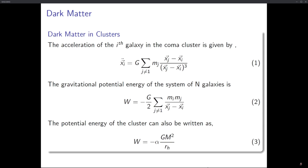Let's say there are N galaxies in the cluster. The acceleration of the i-th galaxy is given by equation one: x-i double-dot equals G times the sum over j (where j ≠ i) of m_j times (x_j minus x_i) divided by |x_j minus x_i| cubed. This is the vectorial notation of Newton's law of gravitation, considering each pair of i-th and j-th galaxies.